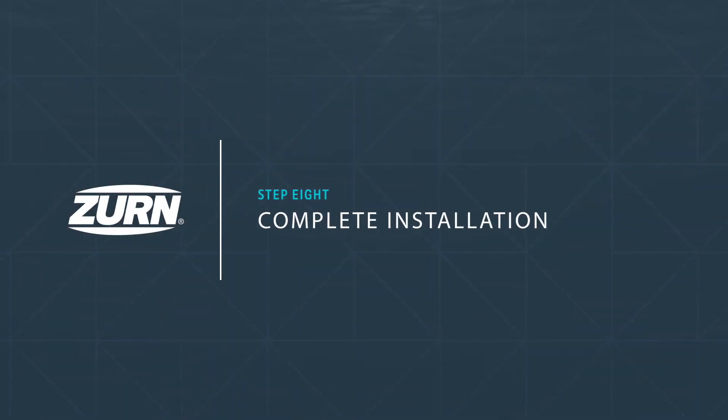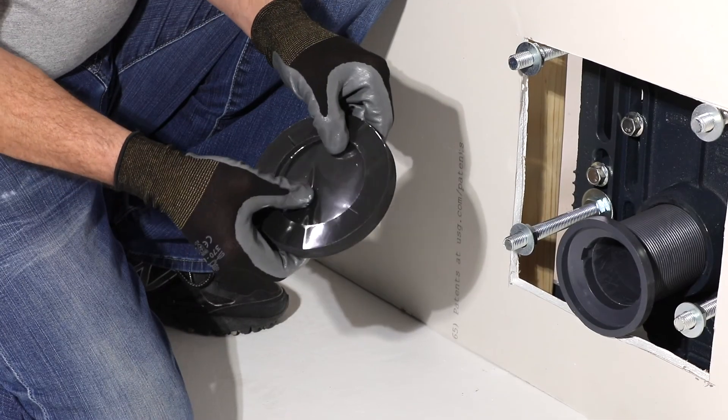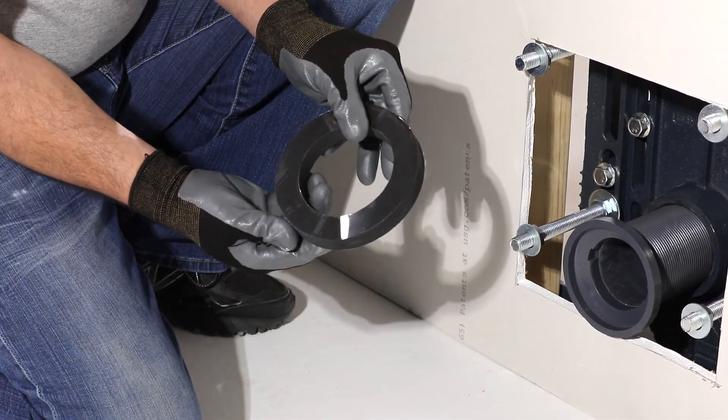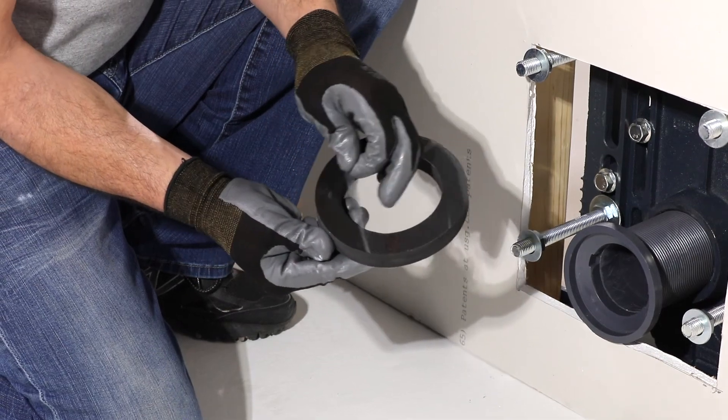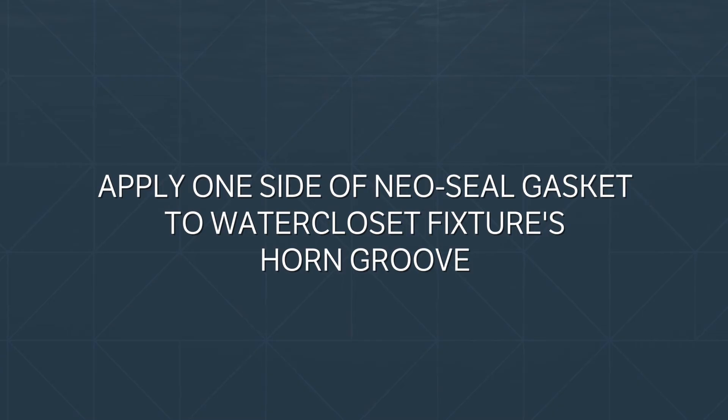Step eight: complete the installation. Peel off the backing from one side of the neo-seal gasket. Set the gasket into the groove of the water closet's outlet horn.